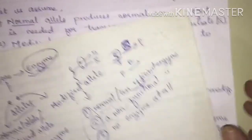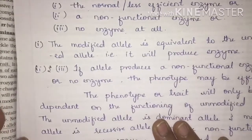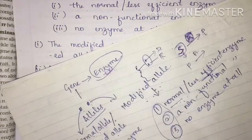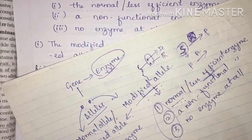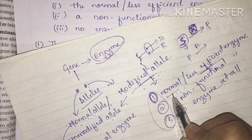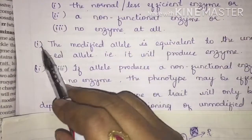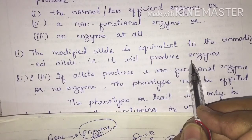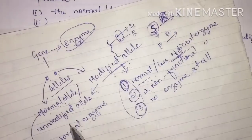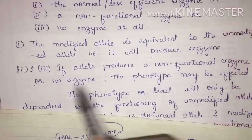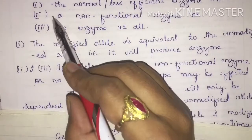Now, the modified allele is equivalent to the unmodified allele only in the first case, because it is producing normal or less efficient enzyme — so substrate gets converted into product in both situations. However, in the second and third cases, when a non-functional enzyme or no enzyme is produced, the phenotype may be affected.